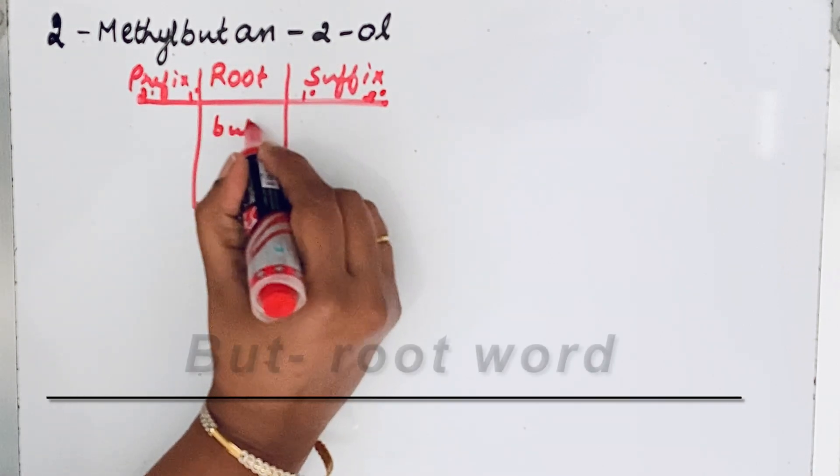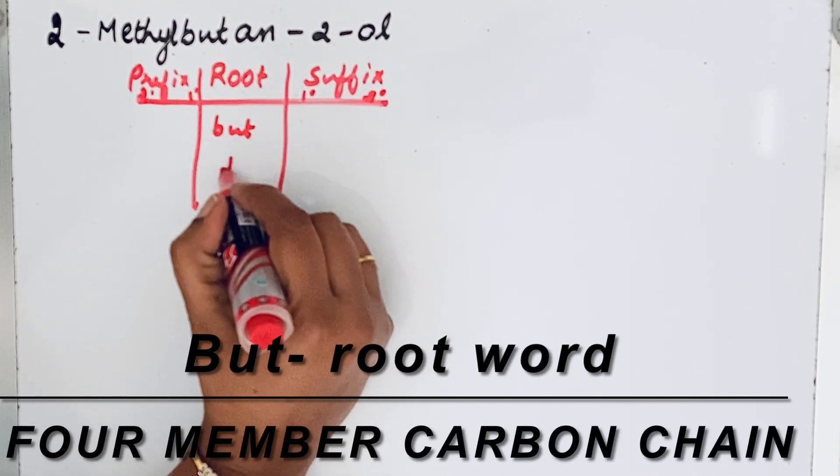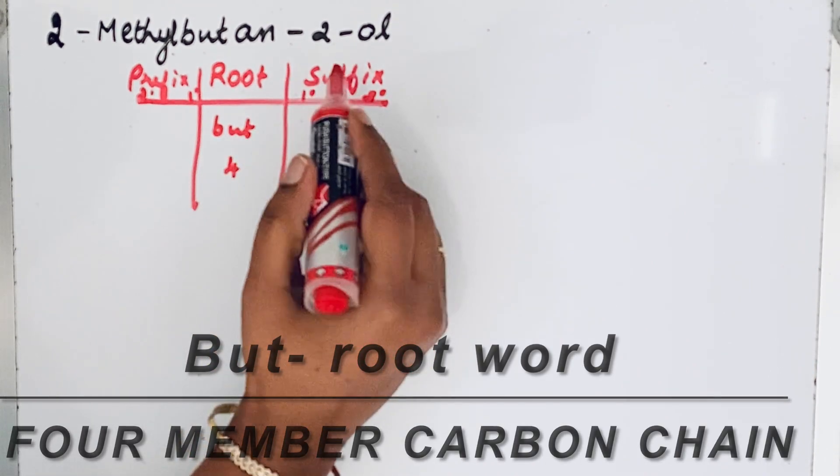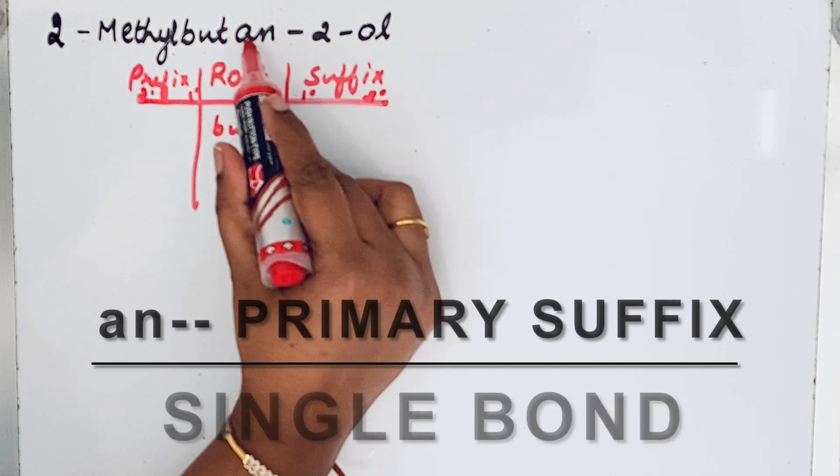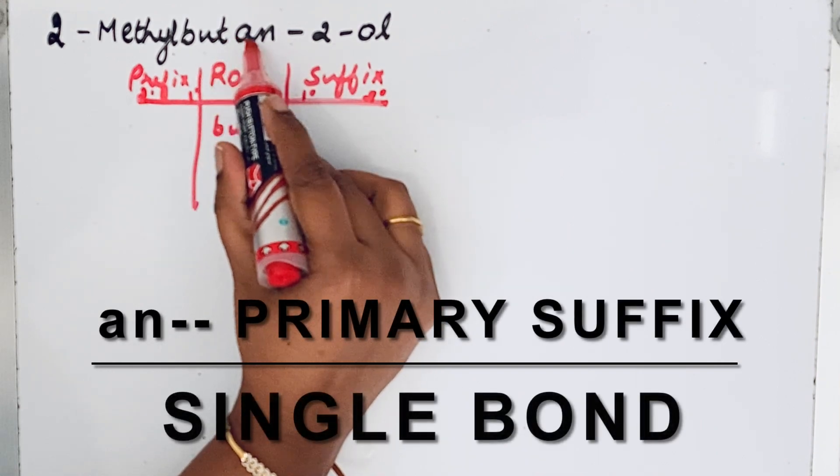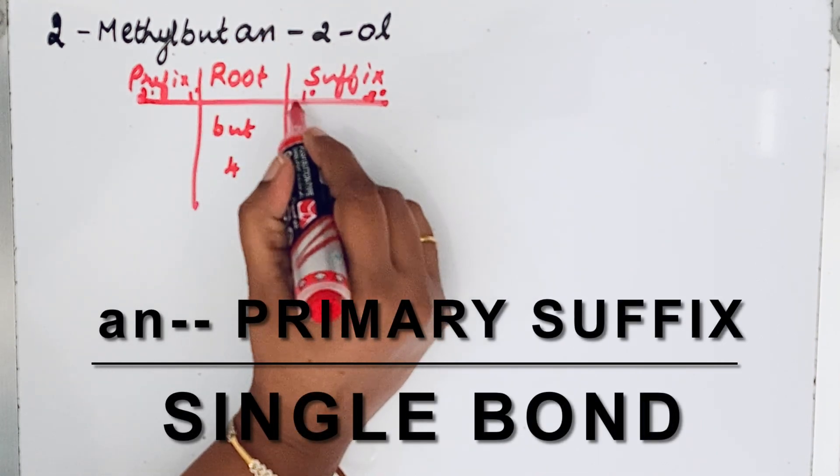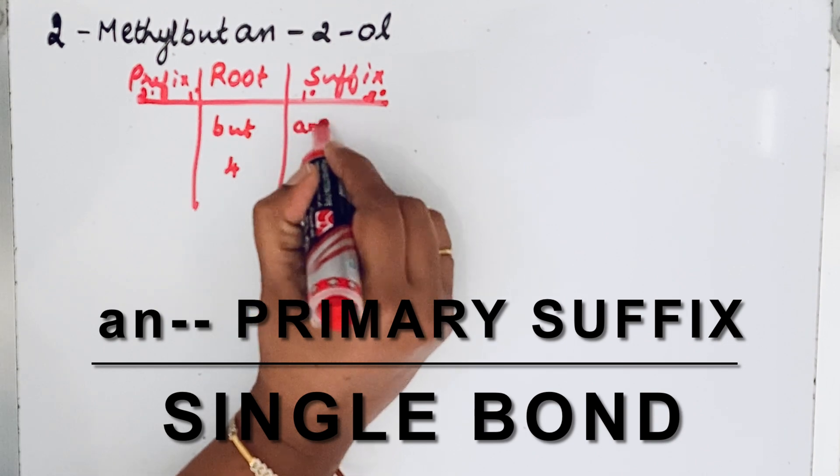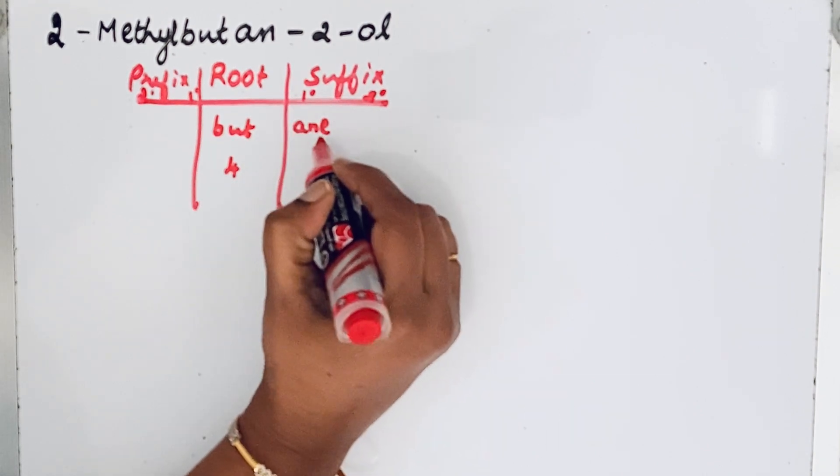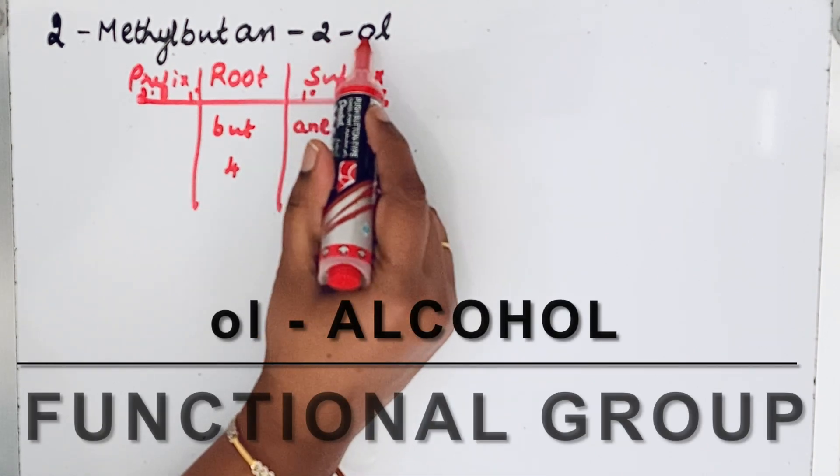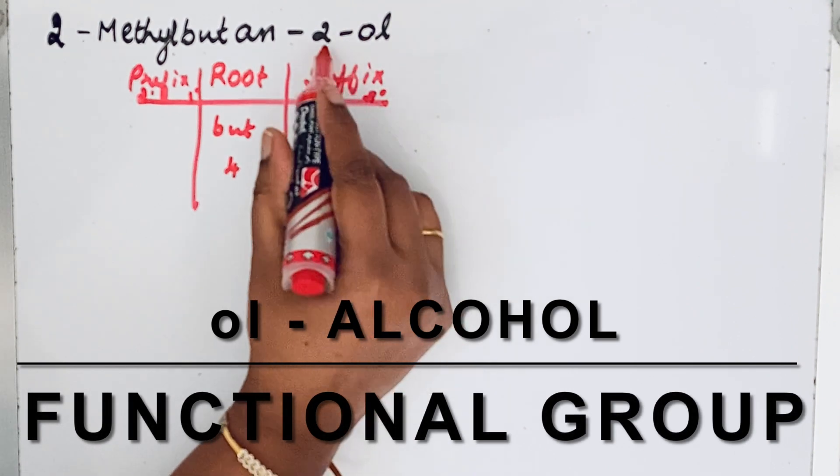Let us write but, which contains four carbon atoms. Then for the suffix, next to butane, the primary suffix is ane, which shows only single bonds. Then in the secondary suffix, we have that in the second position, 2-ol. So that OH group is present.